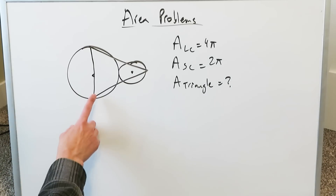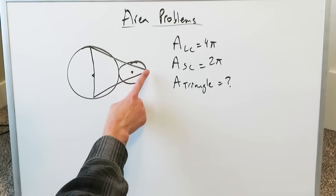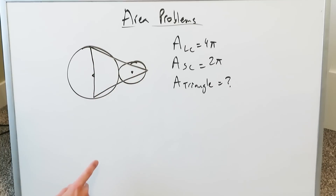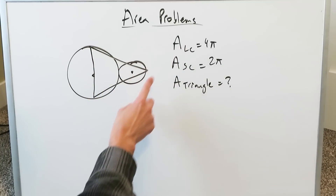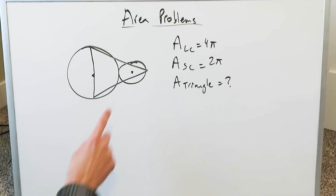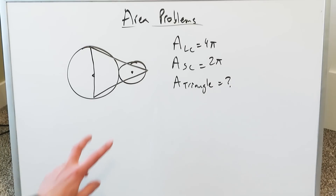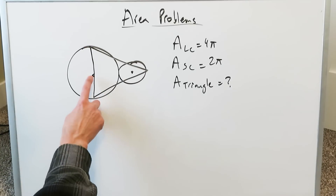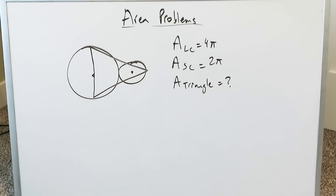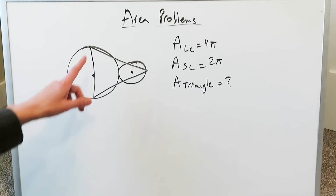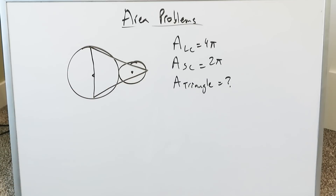We have to determine the area of this triangle that you see, given that the area of this large circle is 4π, the area of the small circle is 2π, the two circles are tangent to one another, and here are the centers. How can we determine the triangle?